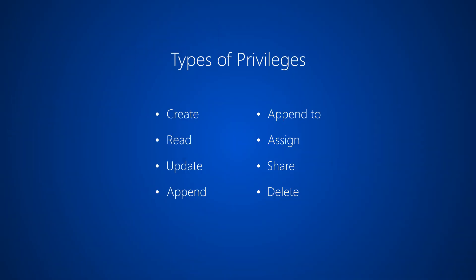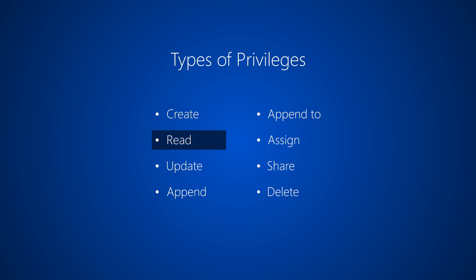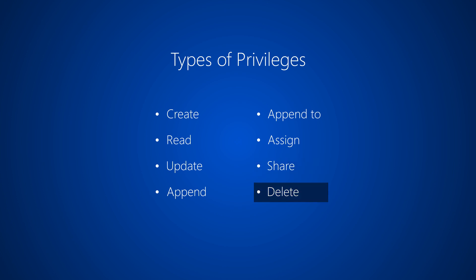Privileges allow users to take actions on records. Create enables a user to create a new record. Read lets a user see a record. Update allows a user to edit an existing record. There are also privileges for append, append to, assign, share, and delete.